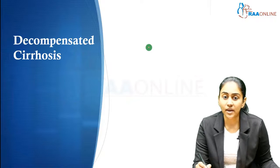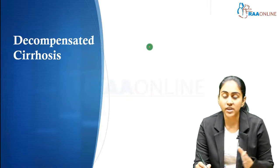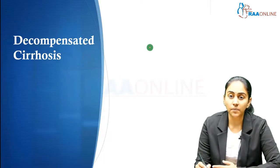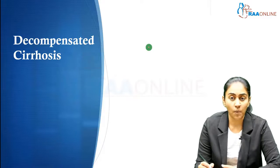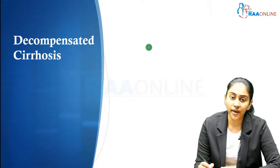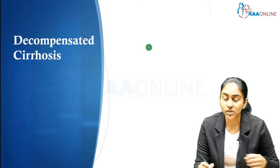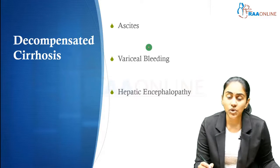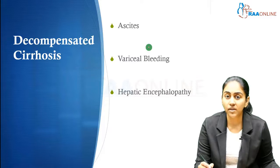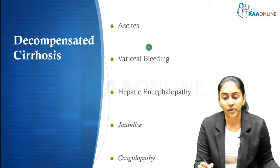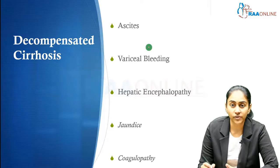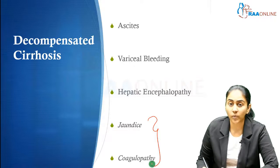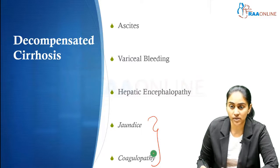What is decompensated cirrhosis? Cirrhosis travels through various stages of stable and compensated cirrhosis before the patient lands in decompensated cirrhosis, when the liver is no longer able to compensate. Decompensated cirrhosis is characterized by ascites, variceal bleeding, and hepatic encephalopathy. Significant impairment of the liver's synthetic functions can result in coagulopathy, and severe liver disease can result in jaundice — both pointing towards advanced cirrhosis.